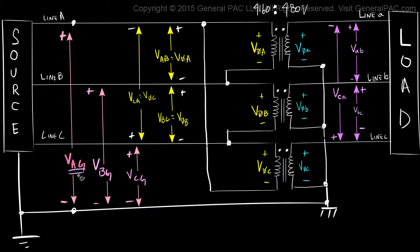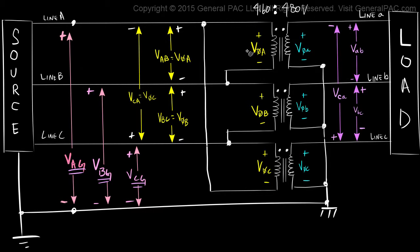Vag is a voltage that is measured across line A and ground. Vbg is a voltage that is measured across line B and ground. And Vcg is a voltage measured across line C and ground. And you see that's the high voltage side, or the delta side of our transformer.